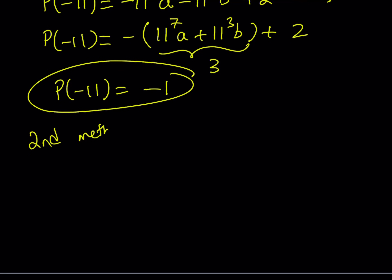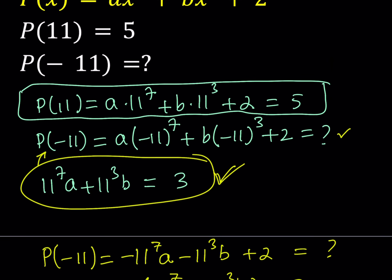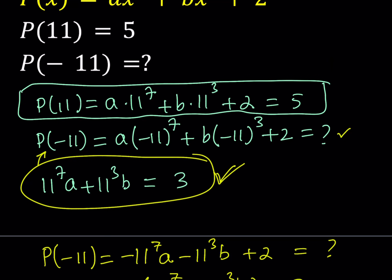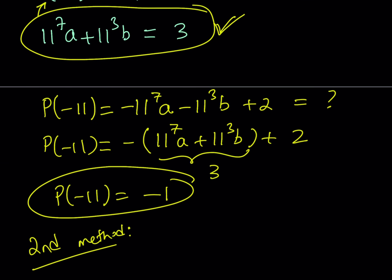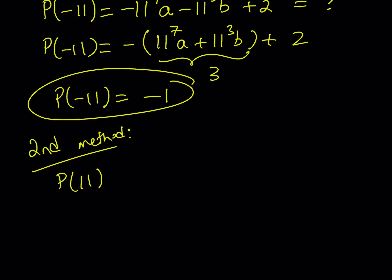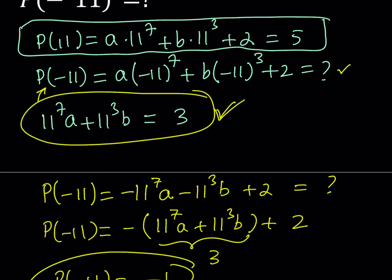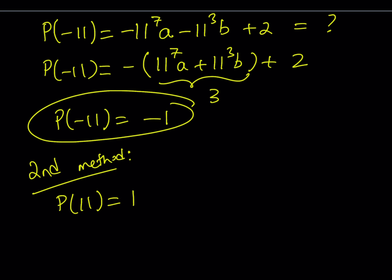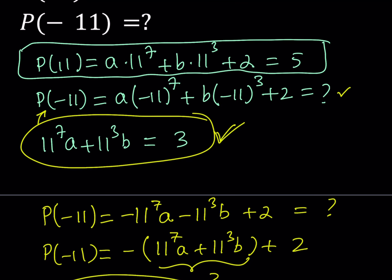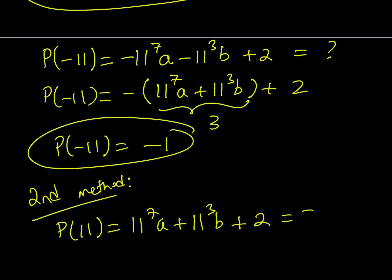So my second method involves the following. Let's go ahead and write down what we have so far. We have P of 11 and that is equal to 11 to the 7th A plus 11 to the 3rd B plus 2, right? And we know that it's equal to 5. Great. So I know that.